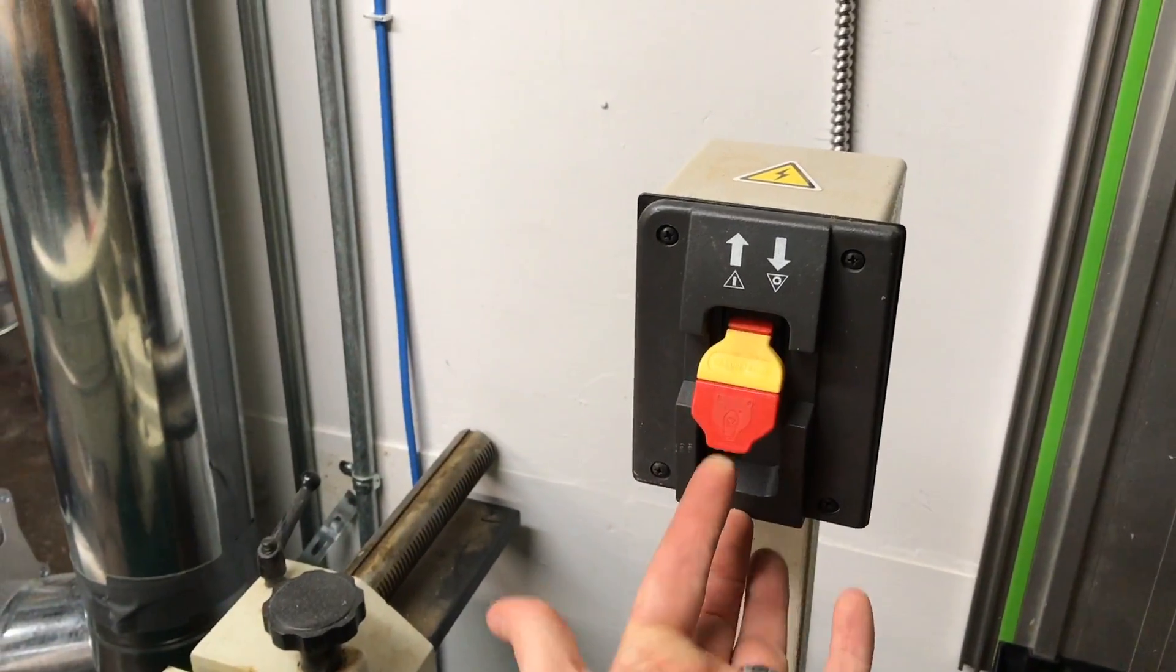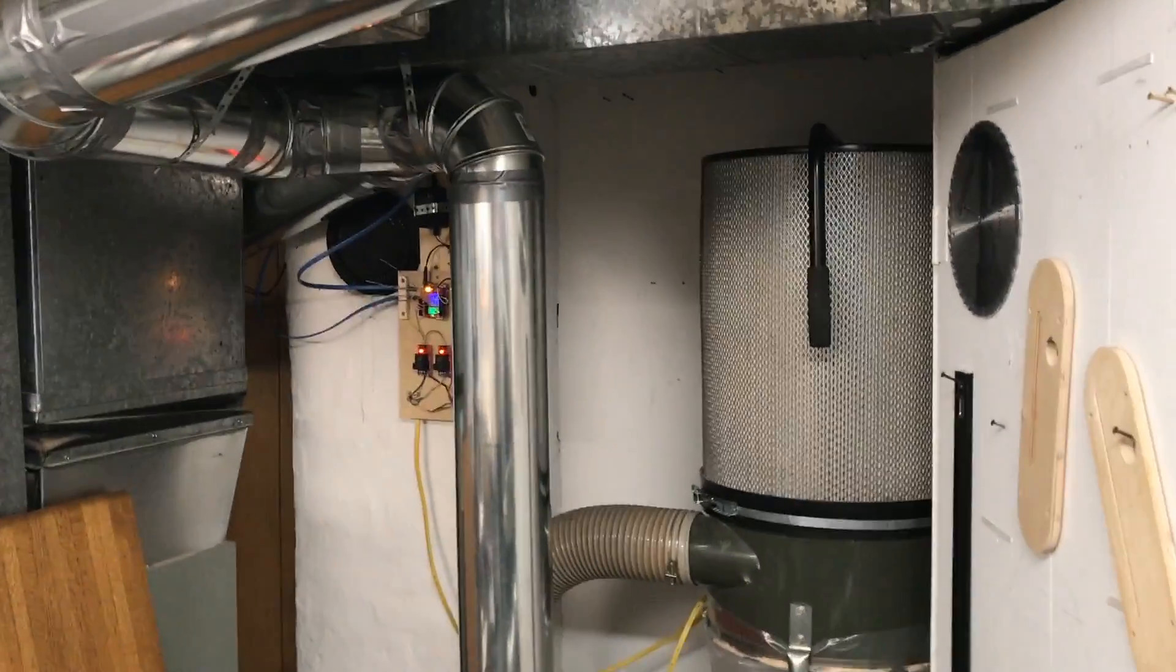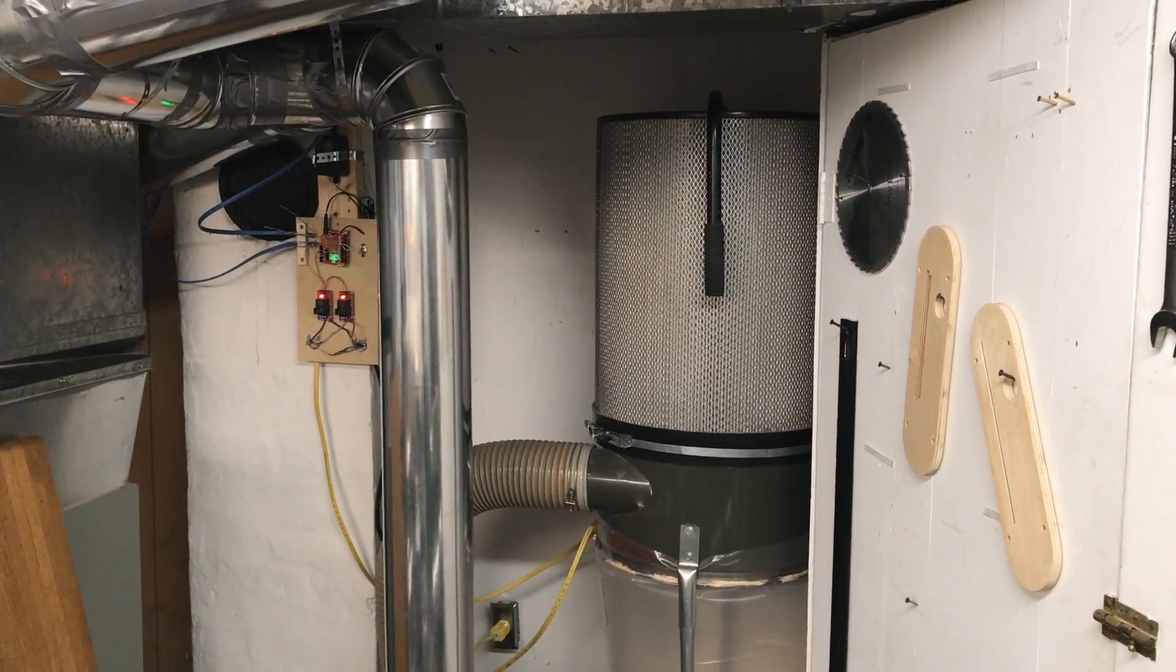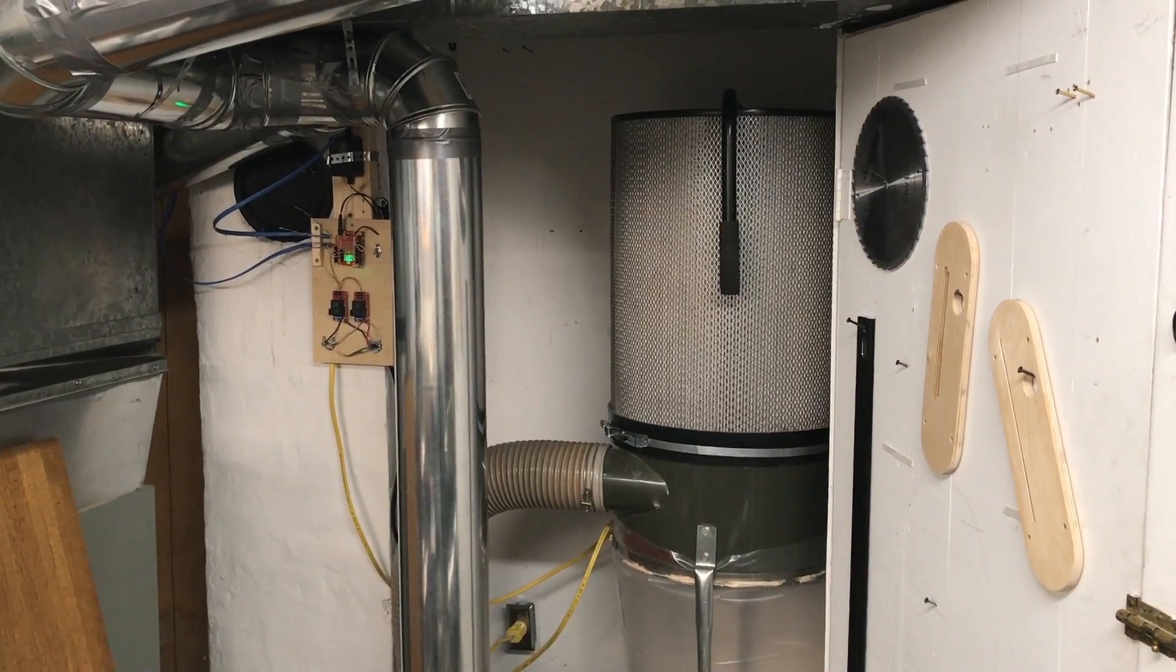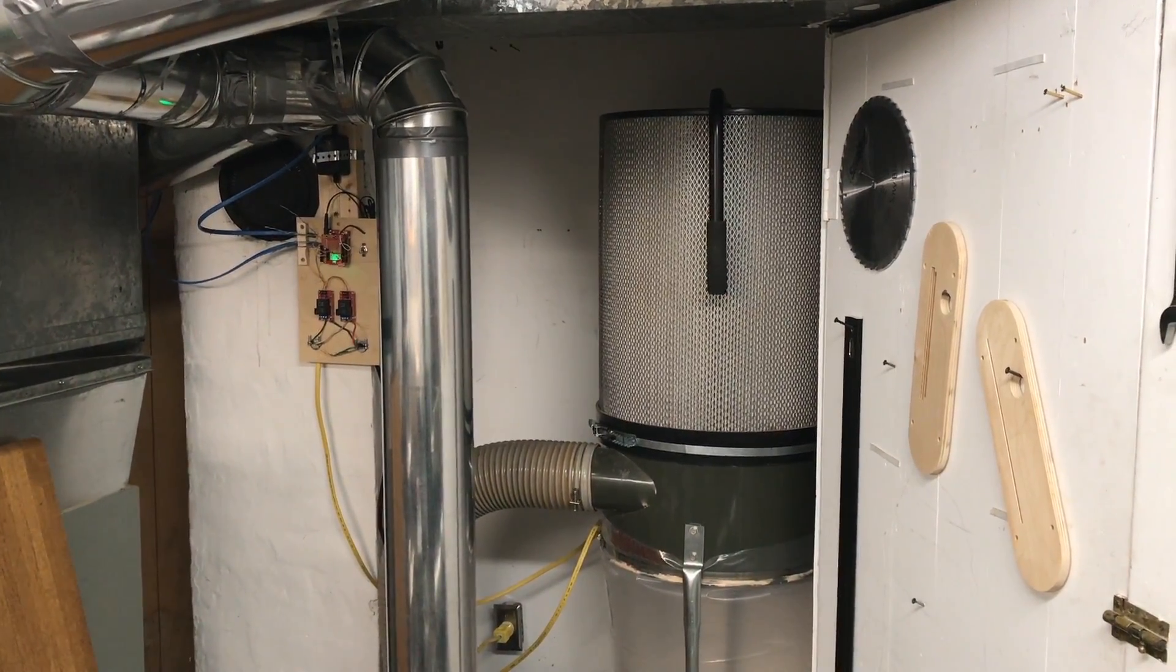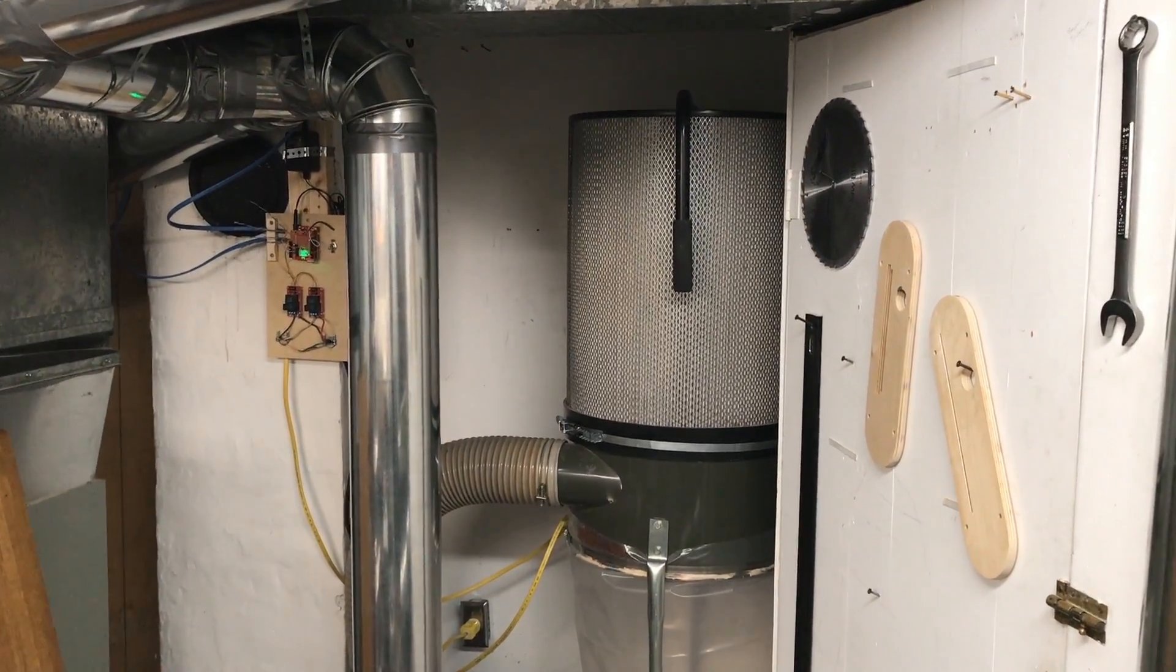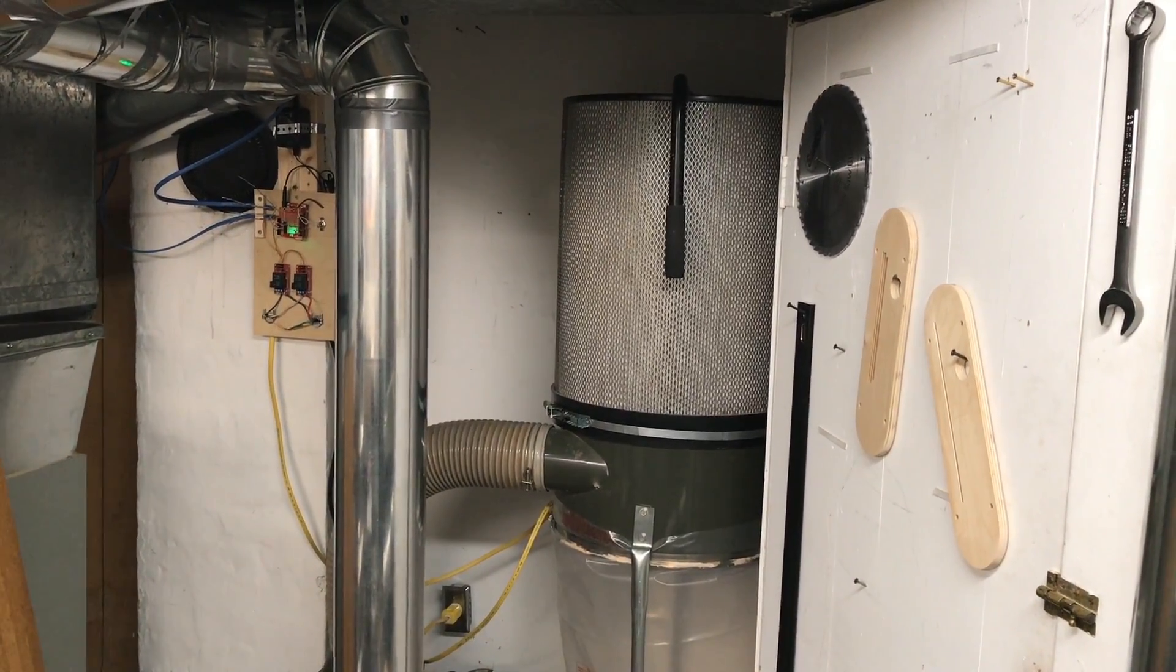So for a stationary tool example here, we're at my jointer. So if we go and turn my jointer on. If you were watching, you would have seen that the yellow LED turned off right as soon as I turned the jointer off. Then five seconds later, the dust collector kicked off.